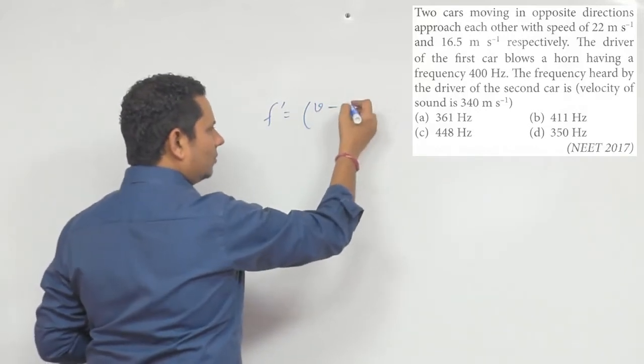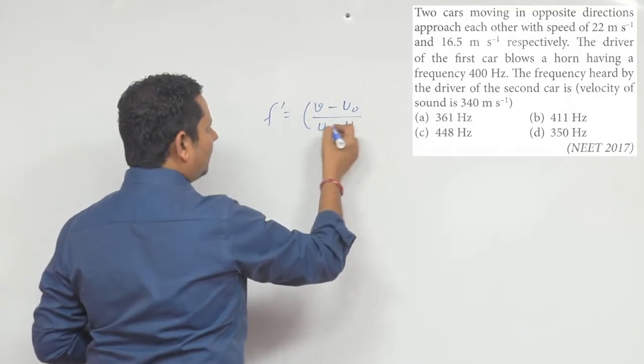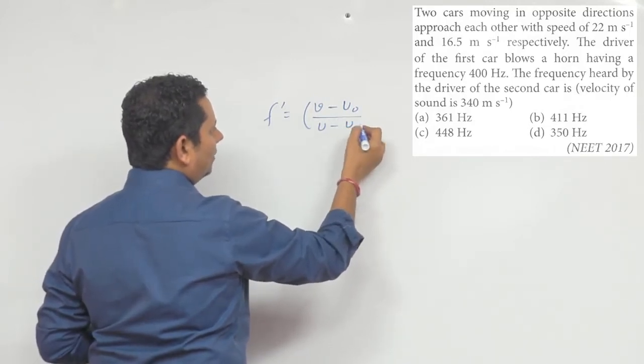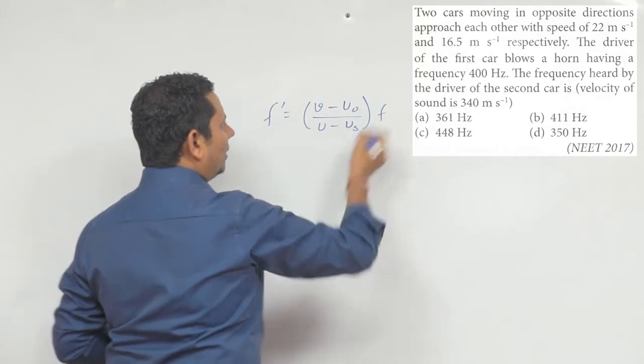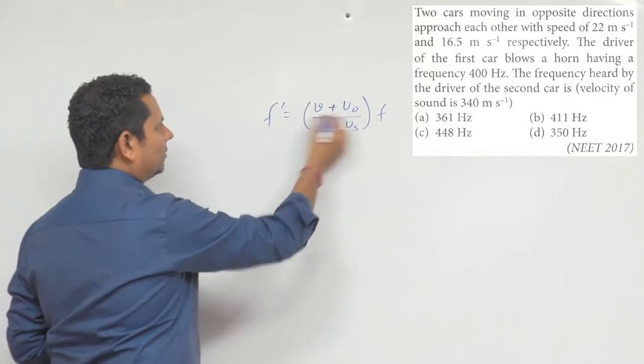plus velocity of observer divided by velocity of sound minus velocity of source, all multiplied by the frequency of source. In the numerator we use plus.